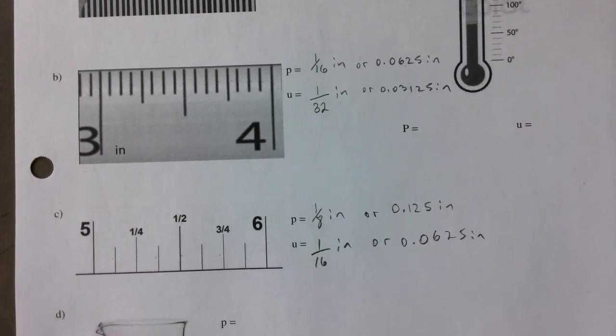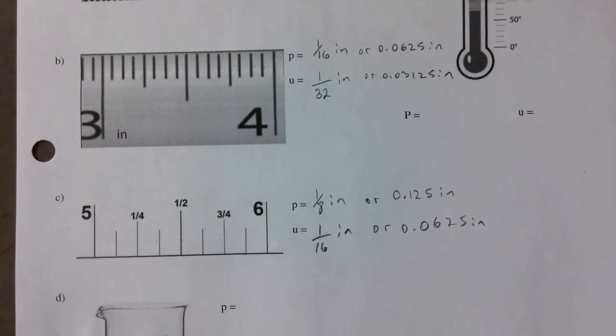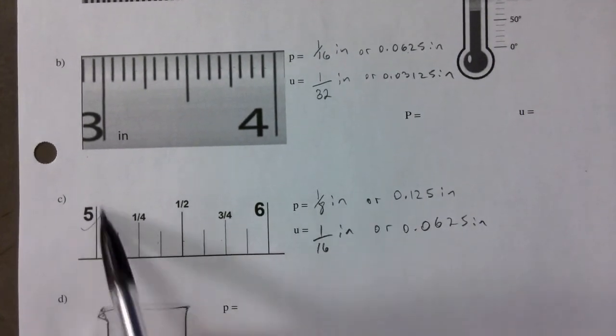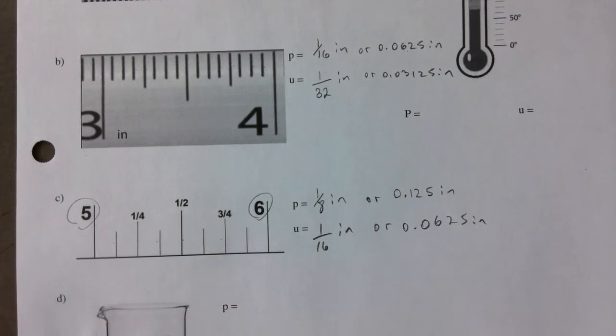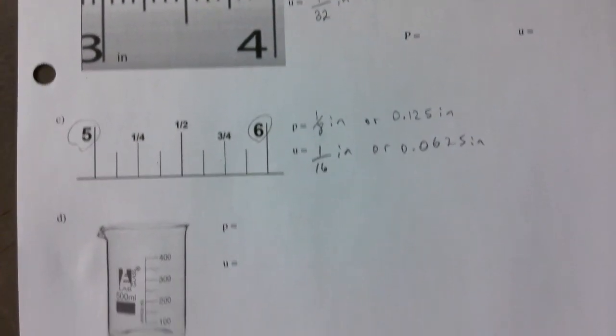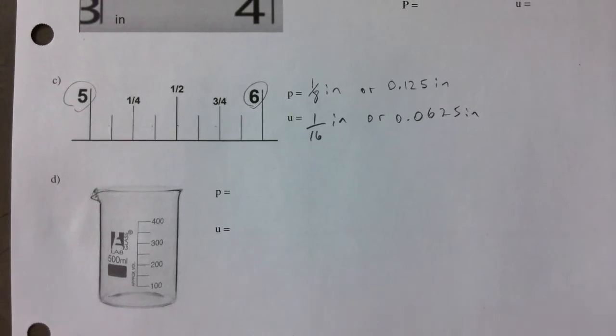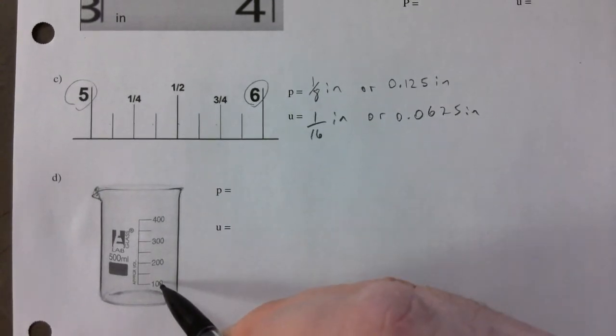You just count from one whole number to the other, count how many spaces there are, especially if it's in the imperial system.